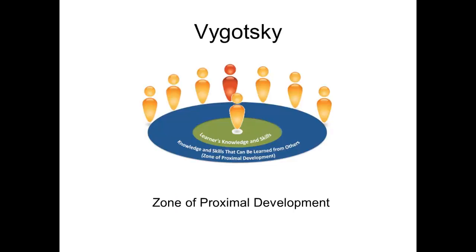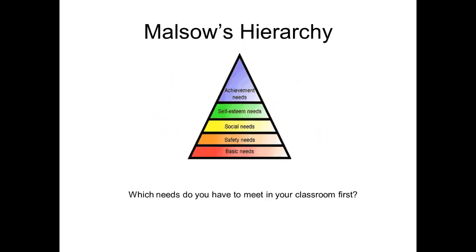Vygotsky knew about development and had a theory about development in education, and his theory has had a definite effect on education today. As Vygotsky knew about development, so did Maslow — his theory has also had a definite effect on education today. Do you realize how?